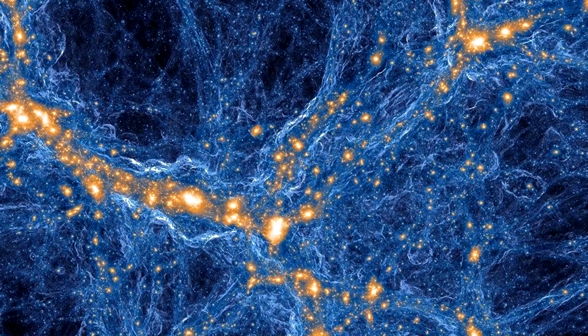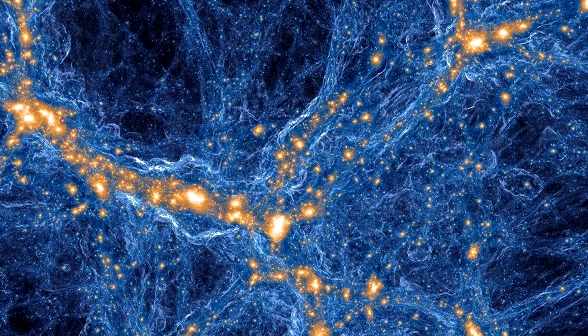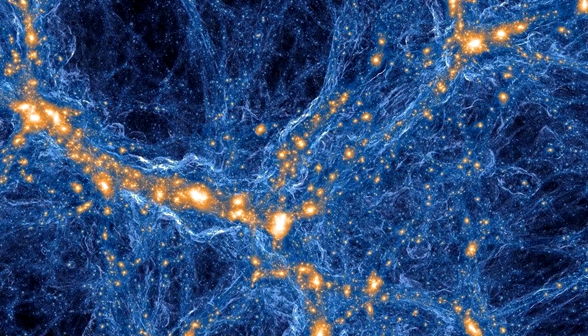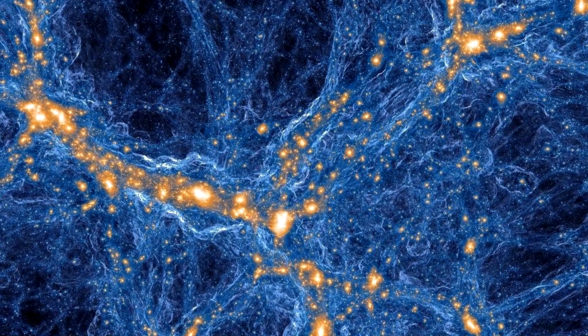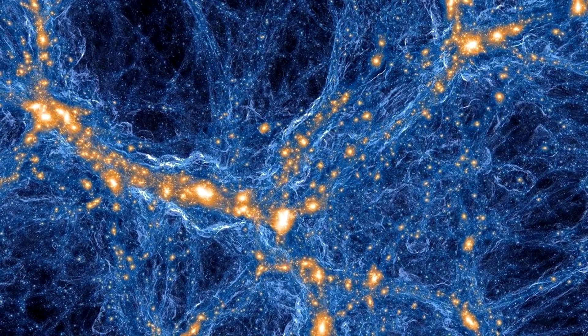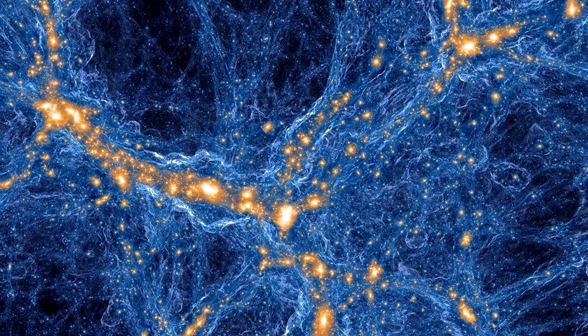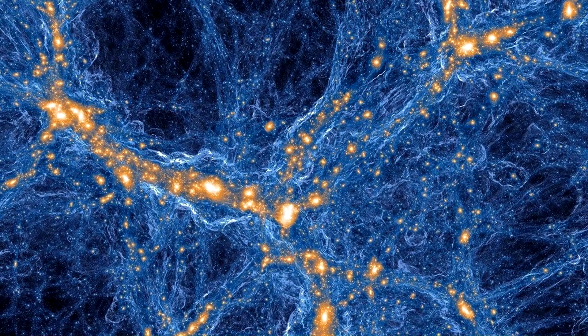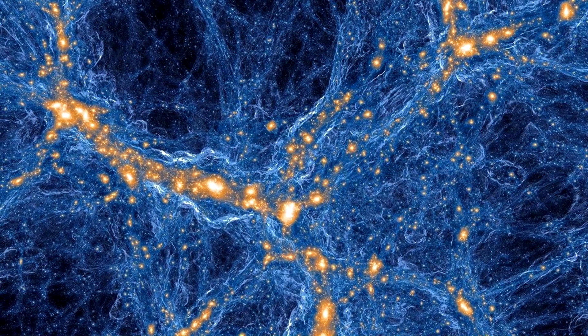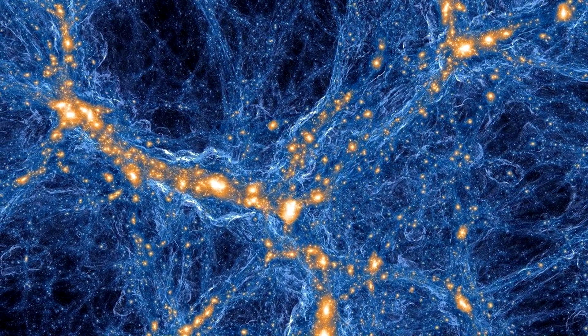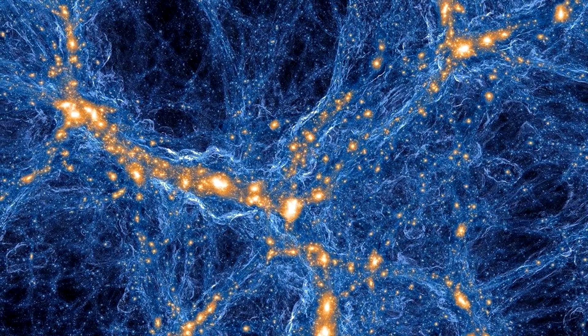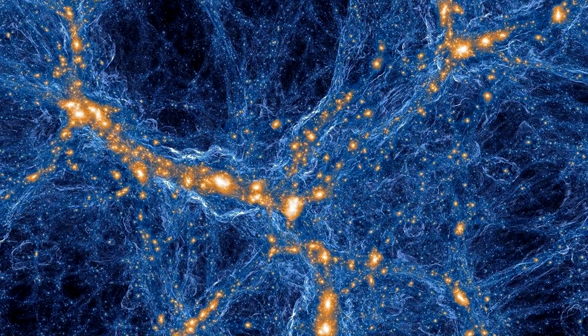Another recent development in the study of the Great Attractor is the use of machine learning algorithms to analyze the movement of galaxies towards it. In 2019, a team of researchers from the University of Portsmouth used a machine learning algorithm to identify a previously unknown supercluster of galaxies that's being pulled towards the Great Attractor. This discovery highlights the potential of machine learning to help us better understand the structure of the universe.